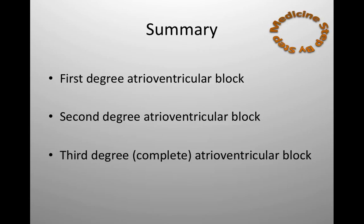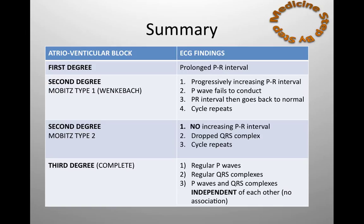To summarise the three different types of atrioventricular block, I have made a table. In first degree atrioventricular block, there is a prolonged PR interval but no missed QRS complexes. In second degree atrioventricular block, there is a dropped QRS complex in both Mobitz type 1 and Mobitz type 2. In Mobitz type 1, the PR interval progressively increases before the QRS complex is dropped, but in Mobitz type 2, the PR interval is constant before the QRS complex is dropped. Finally, in third degree atrioventricular block, the P waves are regular, as are the QRS complexes, but they are completely independent of each other.